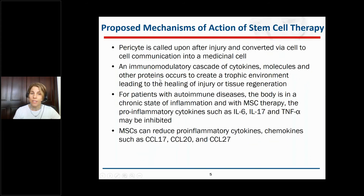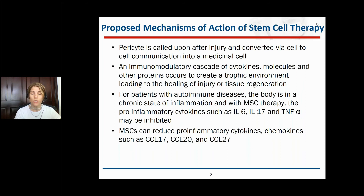The pericyte is something that exists on all of the microvasculature inside our body and is called upon and converted into a mesenchymal-type cell or a medicinal cell, which can create an immunomodulatory cascade of events. This cascade of events is regulated by cytokines and molecules and other proteins, which can create a trophic environment leading to the healing of injury or tissue regeneration and also the reduction of inflammation.